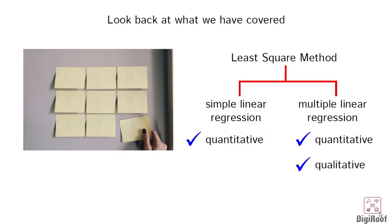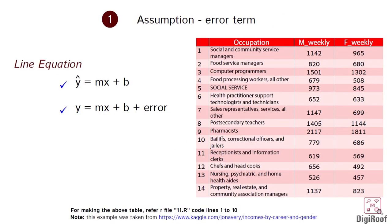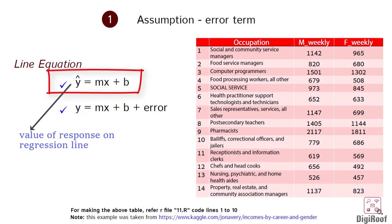We will now understand some underlying assumptions we make while doing regression. First assumption is associated with the line equation. We know that the line equation is y equal to mx plus b, where y is the outcome or response variable, x is the predictor variable, m is slope, and b is intercept.